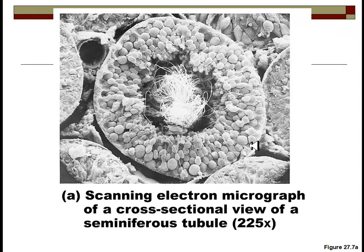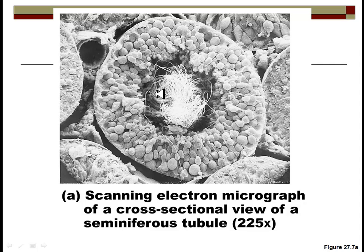This is a scanning electron microscope view of a seminiferous tubule. You can see tails — these are sperm being produced. There's a little head of one and the tail of another visible. There's also a blood vessel here. This seminiferous tubule is magnified 225 times under an electron microscope, giving a very detailed image of the outsides of these cells and the process of producing sperm.